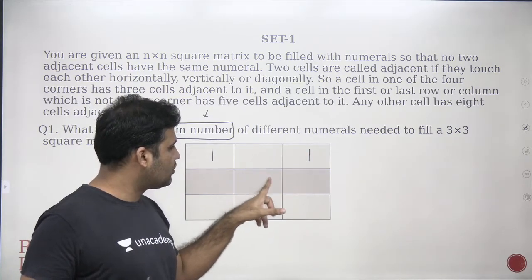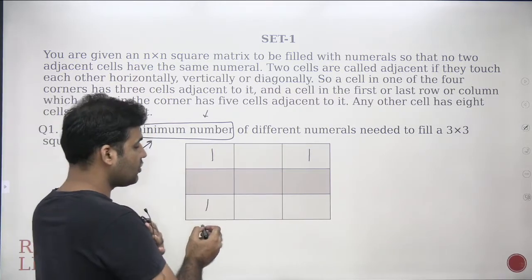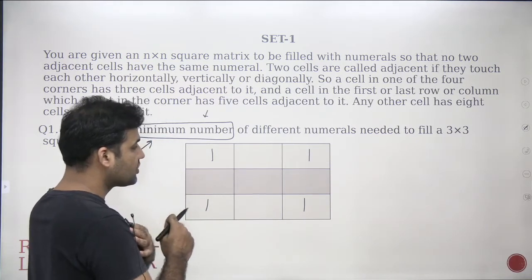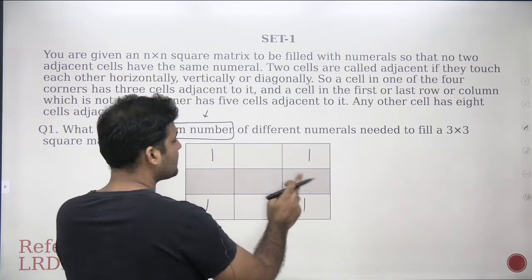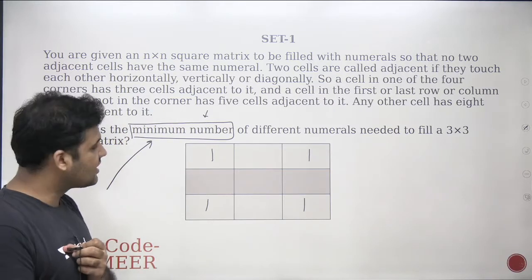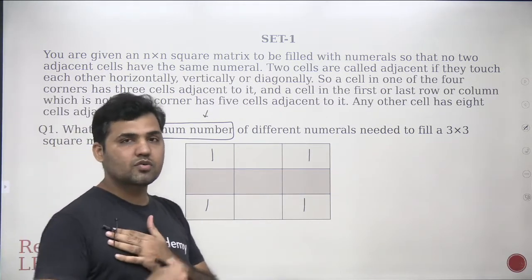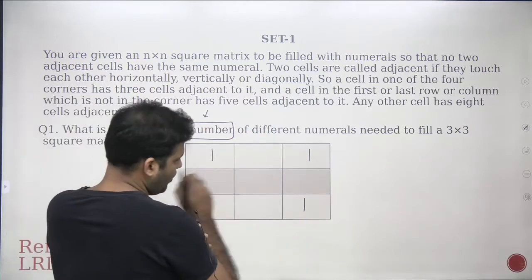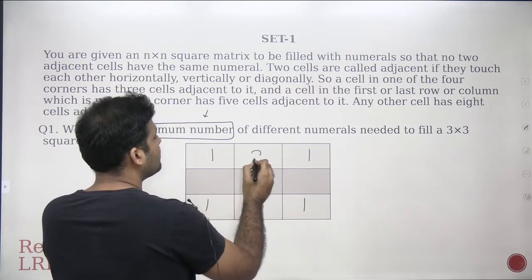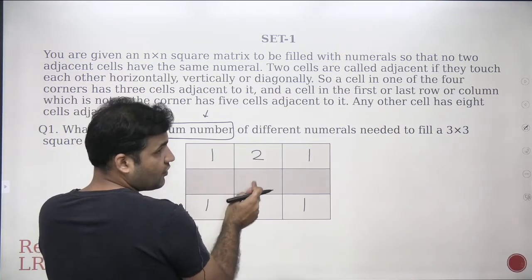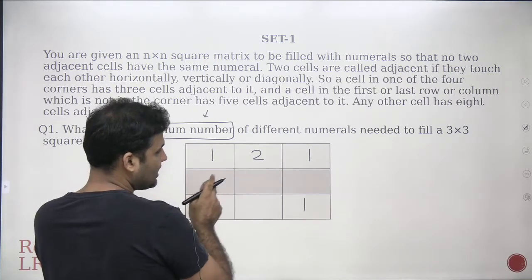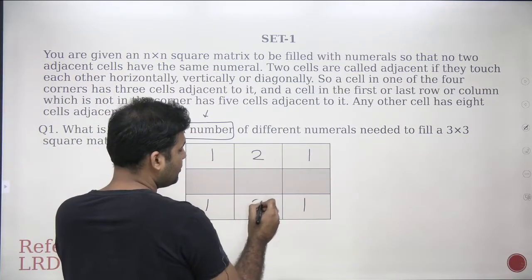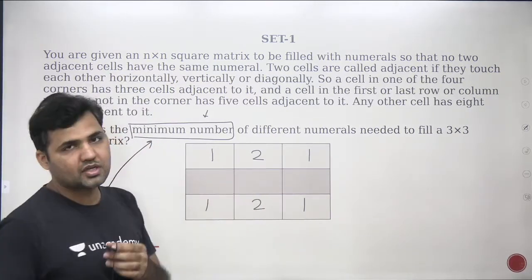Now if one is used in that cell, I cannot use one at its three adjacent cells — but I can use one in other non-adjacent cells. After placing one at all valid positions, there are no more places left for one in the whole matrix. So I have to go to the next digit — let's pick two. If I fill two here, I cannot use two vertically adjacent or diagonally adjacent cells. The only place left in the whole matrix to use two is a cell that is not adjacent to any existing two. So you can use two there.